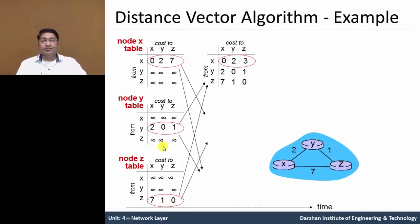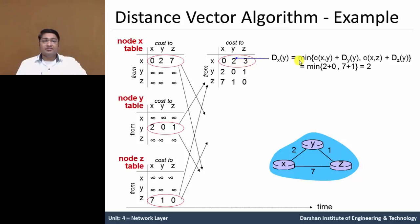After the first iteration, all node tables are forwarded to the next iteration. For node X's updated table, all rows receive values from different node tables. The second row comes from the Y table with values 2, 0, 1, and we see values 0, 2, and 7, giving us 0, 2, and 3. Let us understand how this is calculated.